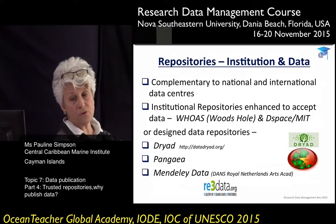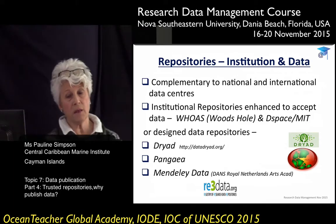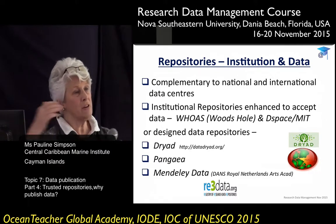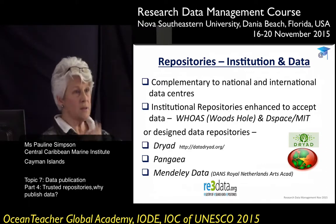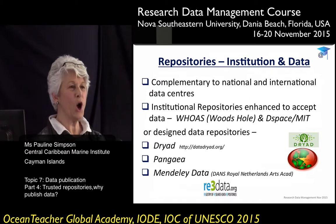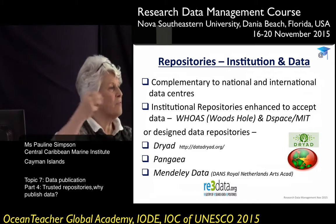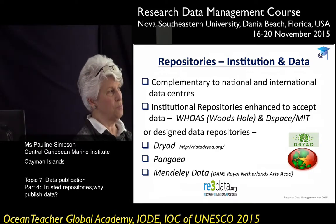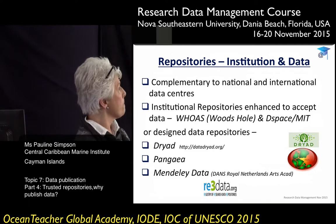There are a number of different types of repositories: institutional repositories and data repositories, all of which I think are complementary to national and international data centers. Institutional repositories started off as publication repositories and are now expanding to include datasets as part of their content. Examples include WHOAS at Woods Hole and DSpace at MIT — both institutional repositories that have expanded and taken on much more of a data publication remit. Then you have the purpose-designed data repositories — Dryad, for instance, is not linked to any particular discipline.